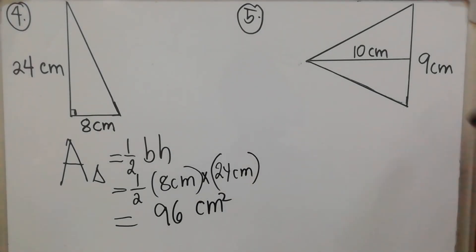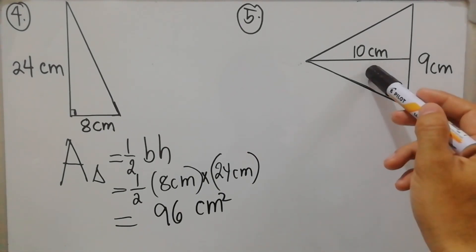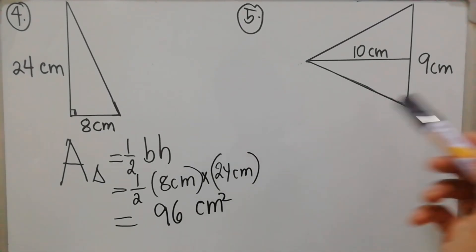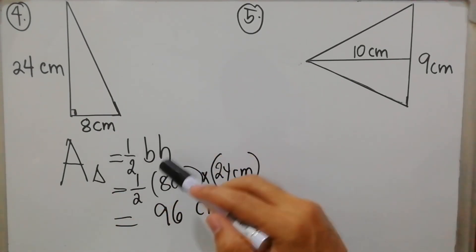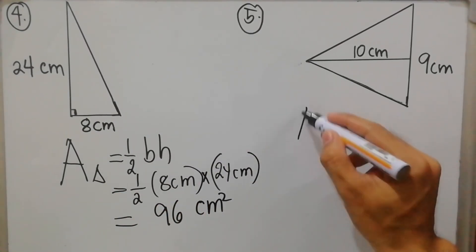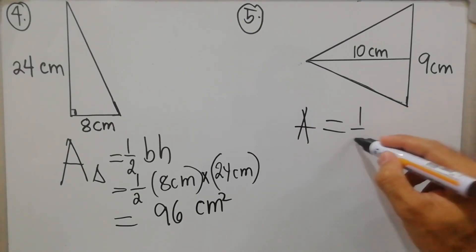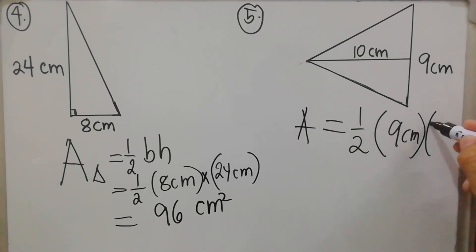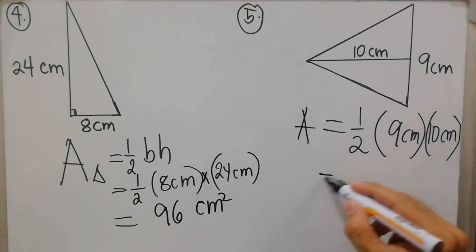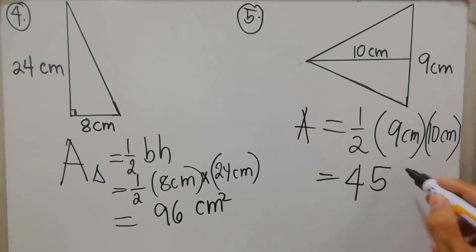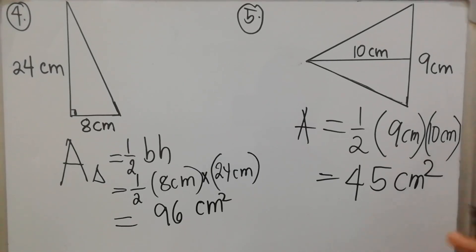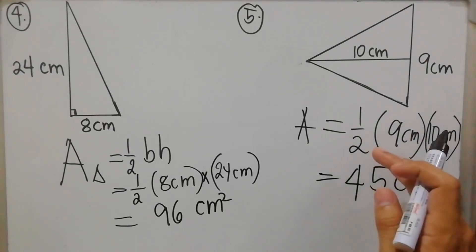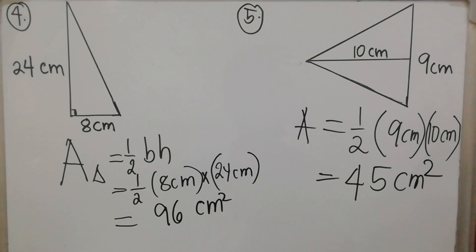For item number five, we have a base of 9 centimeters and a height of 10 centimeters. The formula for the area of the triangle is one half base times height: area = one half × 9 cm × 10 cm. Nine times ten is 90, divided by two equals 45 square centimeters. Or divide first: 10 ÷ 2 = 5, then 5 × 9 = 45 square centimeters.